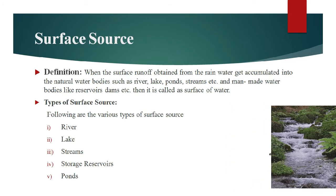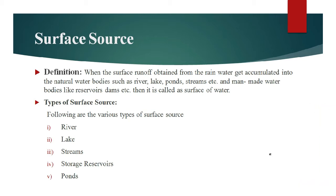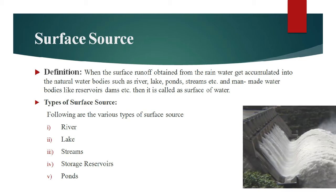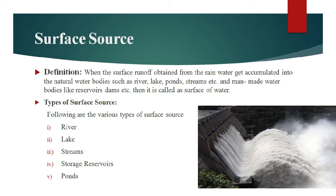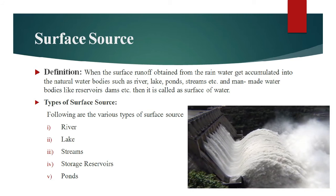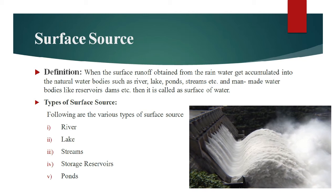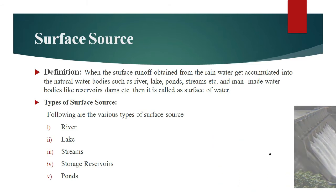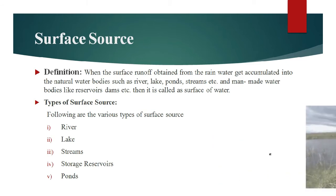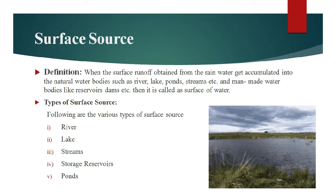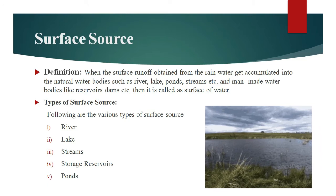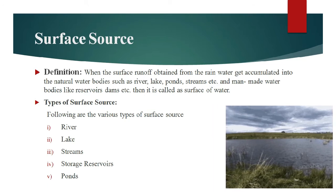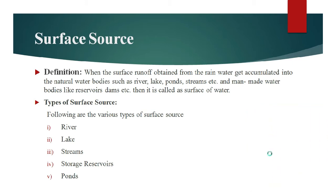The quantity of water available in streams is mostly in the rainy season. Later on, after monsoon, they may go dry. The next surface source is storage reservoir — it is a man-made basin formed by constructing dams at an appropriate site across the river valley where the amount of runoff is more. The last surface source is ponds — natural small-size inland depressions filled with rainwater.